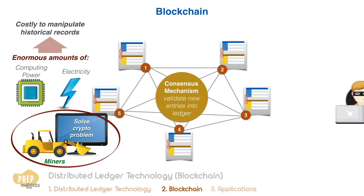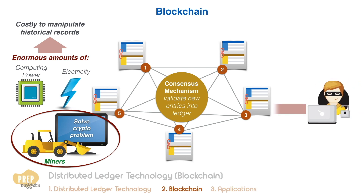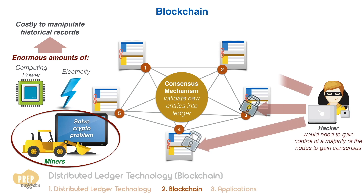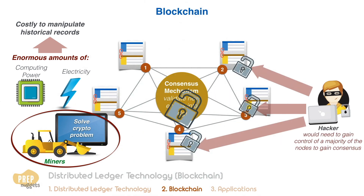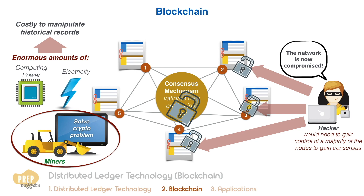In order for a hacker to make a fraudulent transaction on the blockchain, he would need to gain control of a majority of the nodes to gain consensus. For this reason, the more participants there are in the network, the more secure it is, as it gets harder for a hacker to gain majority control.